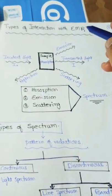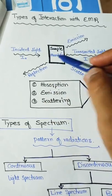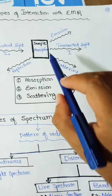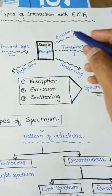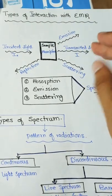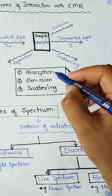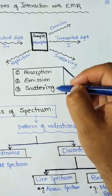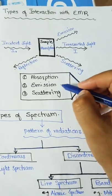There are different types of interactions of a sample with electromagnetic radiation. When incident light enters a sample, some portion is absorbed while the rest is transmitted. Some light may also be reflected, and some causes emission and scattering. The three most important types of interactions used to identify samples are absorption, emission, and scattering.